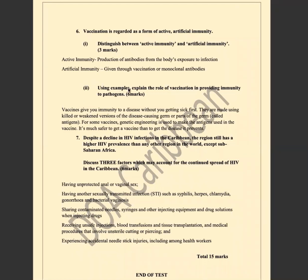Using examples, explain the role of vaccination in providing immunity to pathogens. Getting a vaccine is very important because it gives us immunity to a disease without us getting sick. For example, thinking about the coronavirus in the Caribbean — people who did not get the disease were introduced to the COVID-19 vaccine, which gave them immunity against the coronavirus disease.